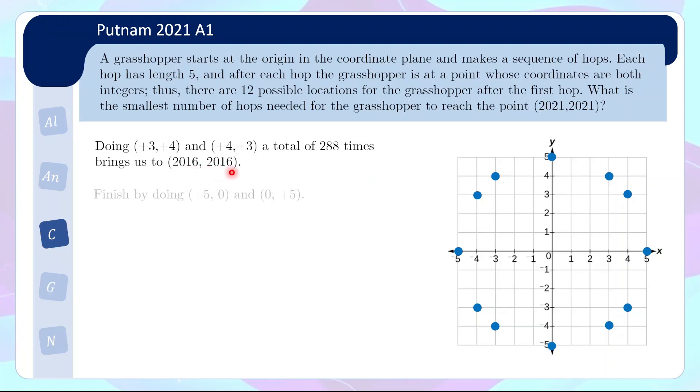So very nice and coincidentally, we can now finish at (2021,2021) if we do a (+5,0) and (0,+5). So what we have just done is we have constructed a sequence of hops that requires only 578 hops to reach the finish point. Okay, the key question then is, is this the smallest number of hops needed?